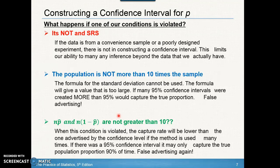What happens if one of the conditions is violated? If it's not a simple random sample, the data is from a convenient sample or poorly designed experiment, and there's really no point in constructing a confidence interval — it won't give a good representation of the population. In order to make inference about the population, you must have a simple random sample. Without one, this limits our ability to make any inference beyond the data we actually have.